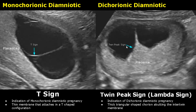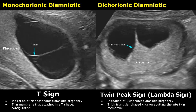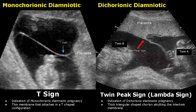The T-sign is an indication of monochorionic-diamniotic pregnancy. This thin membrane attaches in a T-shaped configuration. The twin peak sign, also known as the lambda sign, is an indication of dichorionic-diamniotic pregnancy. A thick triangular-shaped chorion will be seen abutting the intertwin membrane. Here are more images — this is the T-sign and this is the twin peak sign, where the triangular-shaped chorion is seen.